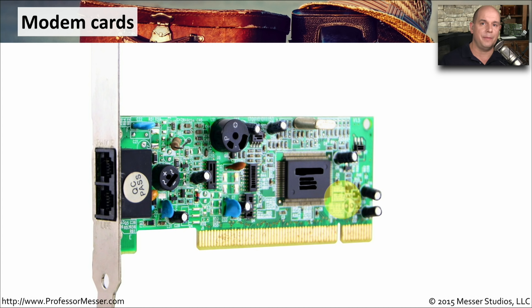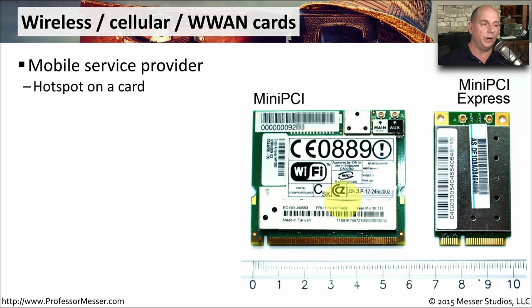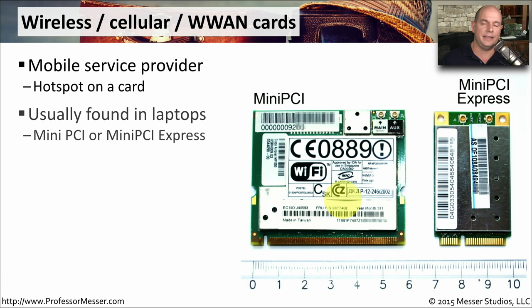In some environments, you may have systems that don't have any type of internet connectivity, and the only way to network these devices is over phone lines. So you may need to have a modem installed with a modem adapter card inside of your computer. The modern version of those modem cards is the wireless WAN card, or the cellular card, where you're connecting to a wireless service provider to get your internet access.